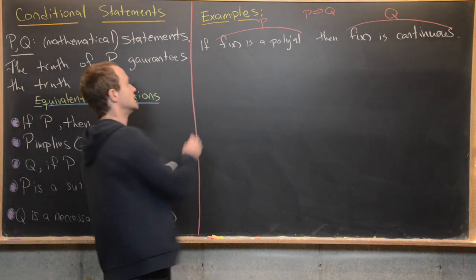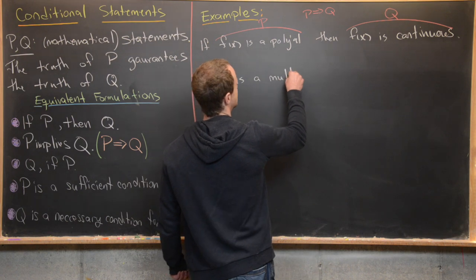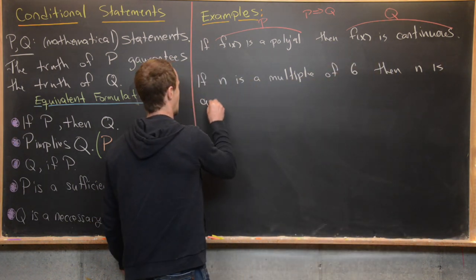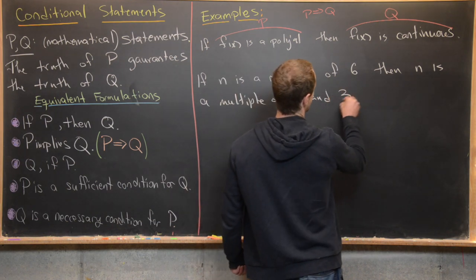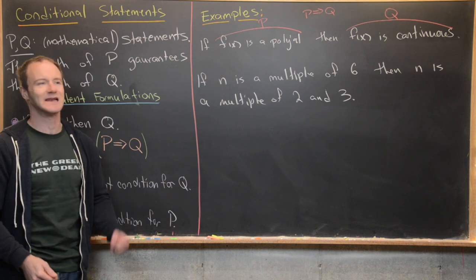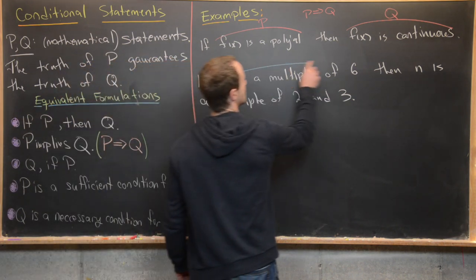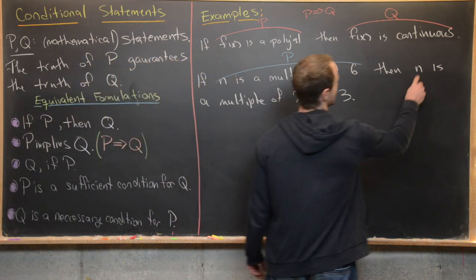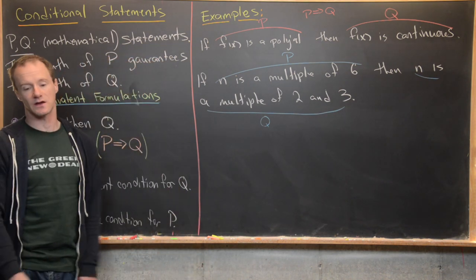Let's do another example: if n is a multiple of six, then n is a multiple of two and three — that is, it's a multiple of two and also a multiple of three. Here, statement P is 'n is a multiple of six,' and statement Q is 'n is a multiple of both two and three.'